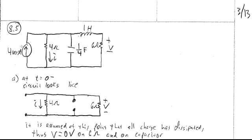Prior to t equals 0, the 0 amp current source behaves like an open circuit. At t equals 0 minus we have that open circuit, a 4 ohm resistor where our reference I is measured, a quarter farad capacitor, a one henry inductor, and our voltage reference V is across the 6 ohm resistor. This problem differs from typical RLC problems where I is through an inductor and V is across a capacitor.